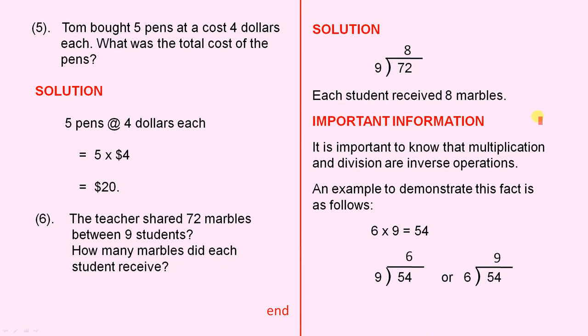Now here's some very important information. It is important to know that multiplication and division are inverse operations. An example to demonstrate this fact is as follows. We know from our tables that six nines are 54. Nine divided into 54 goes six times. Nine sixes are 54. Six divided into 54 goes nine times. Six nines are 54.